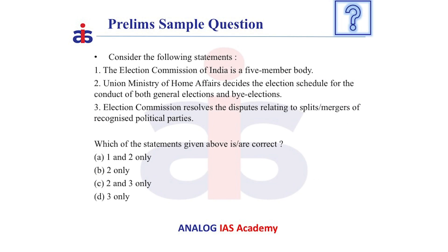Now let us see a previous year question based on this. Consider the following statements. Statement one: The Election Commission of India is a five-member body. This is false, because it is a three-member body consisting of the Chief Election Commissioner and two other Election Commissioners.